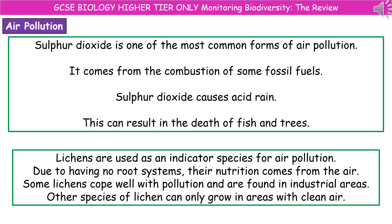One of the key things we need to monitor is air pollution. One of the most common forms is sulphur dioxide, which comes from the combustion of some fossil fuels. When sulphur dioxide is released, it causes acid rain, which can result in the death of fish and trees. The indicator species for air pollution are lichens. Because they've got no root system, all of their nutrition comes from the air. Some lichens cope very well with pollution and are found in industrial areas, while other species of lichen only grow in areas with clean air. Just by looking at what lichens are present, we get an idea about the quality of the air in that particular area.